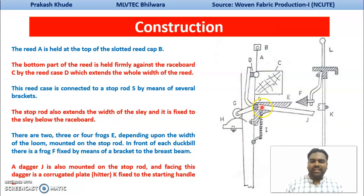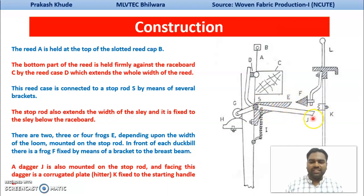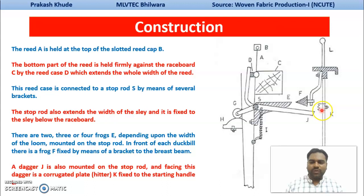This stop rod has three connections. One is the anti-friction bowl (G), one connection is to the spring (I) which has been mounted here, and another is your dagger (J) or duckbill (E). In front of this dagger, there is a corrugated plate or heater. And in front of your duckbill, there is a frog arrangement. These are the three components that have been attached with your stop rod.